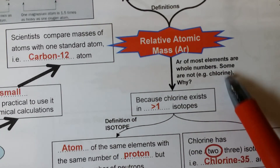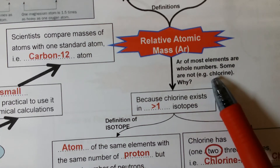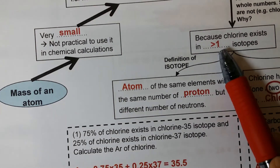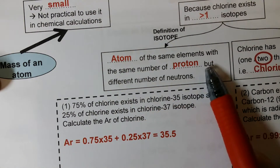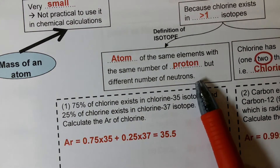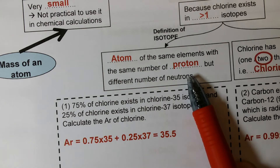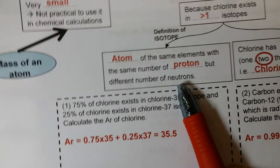In the periodic table, you can find that the AR of some elements is not a whole number. In fact, chlorine is a notable example. Why? Because chlorine exists in more than one isotope. Isotopes are atoms of the same element with the same number of protons but different number of neutrons. Isotopes are essentially like twins — same parents, same number of protons, but slightly different in terms of number of neutrons.